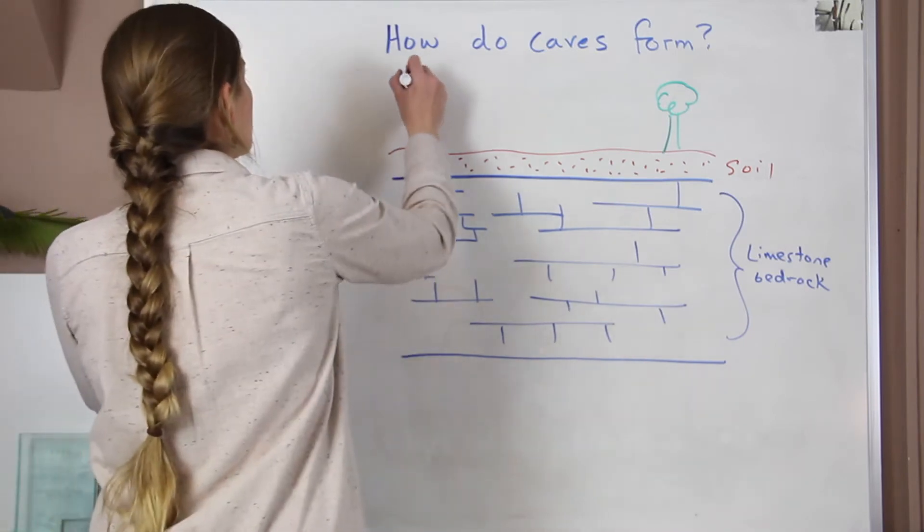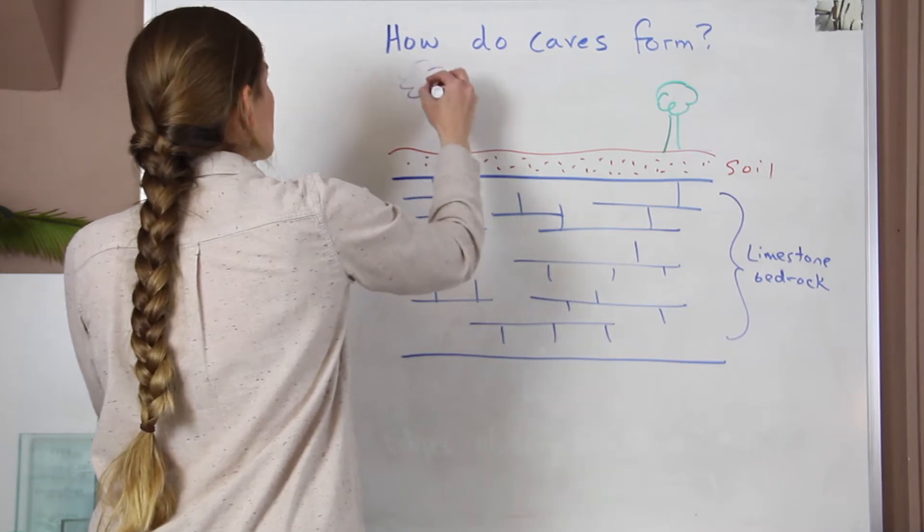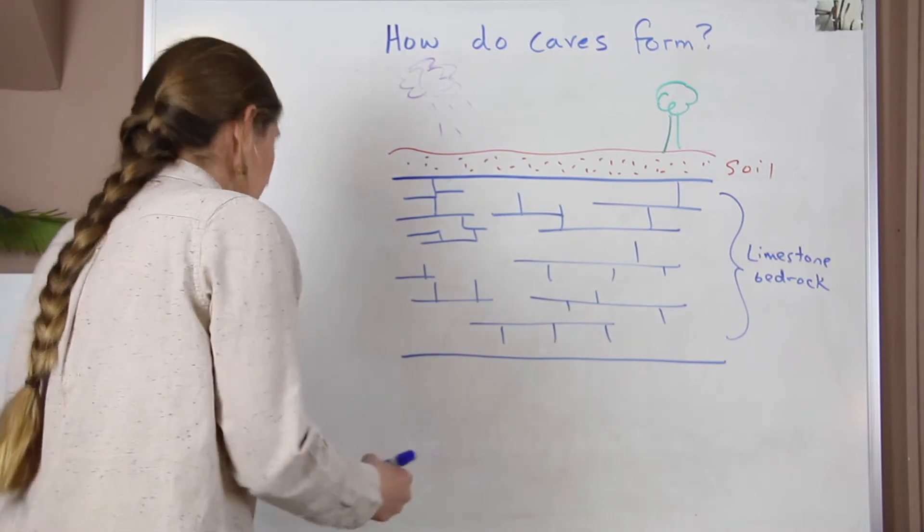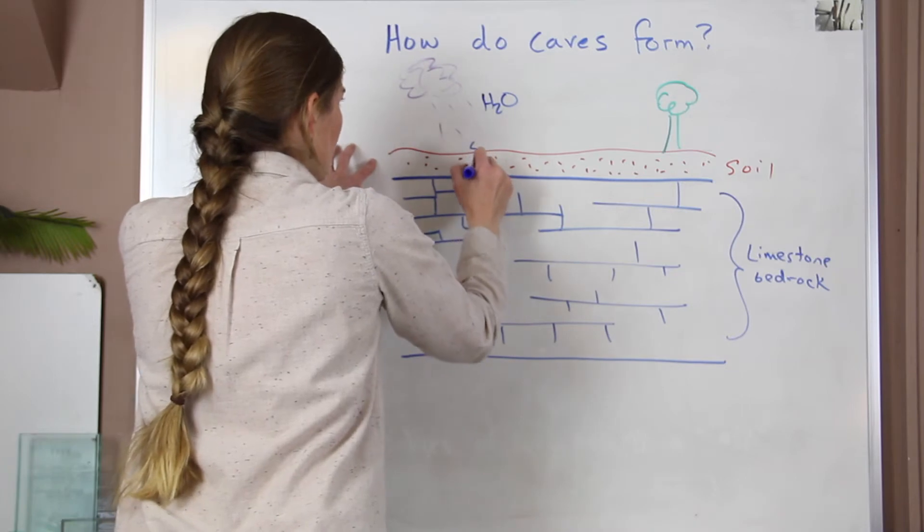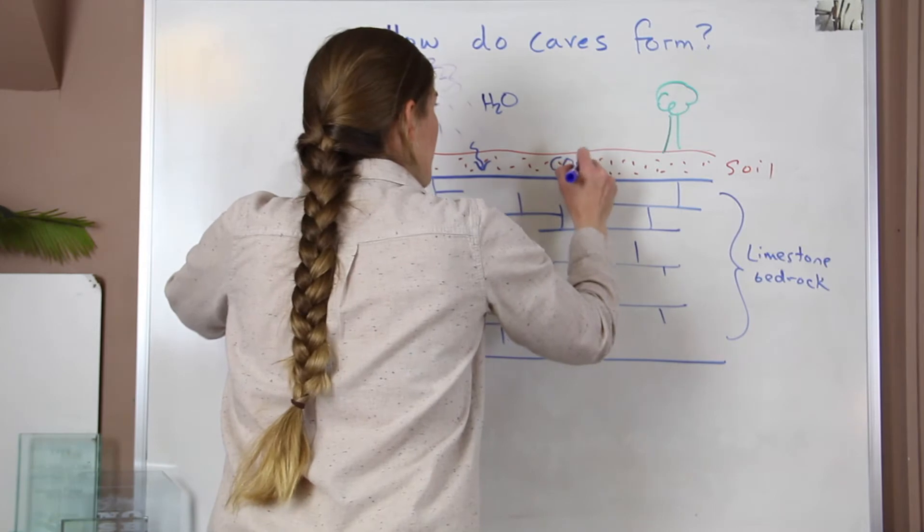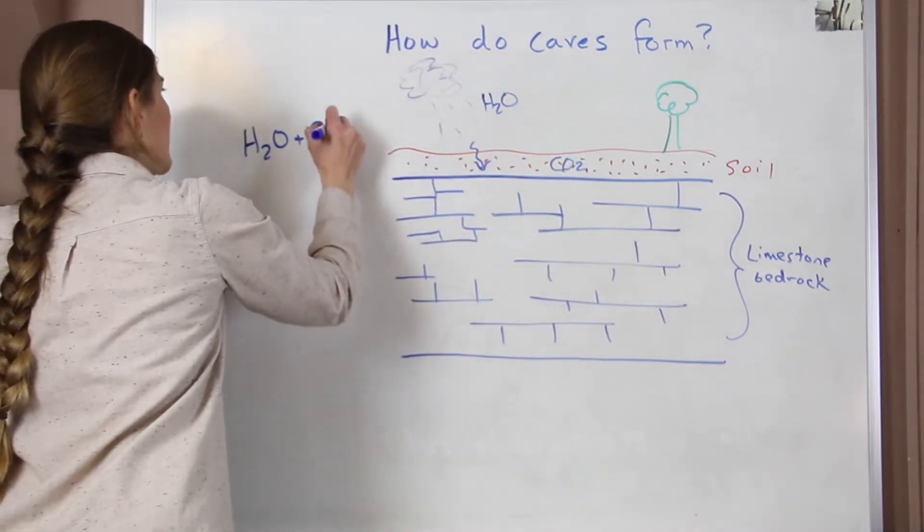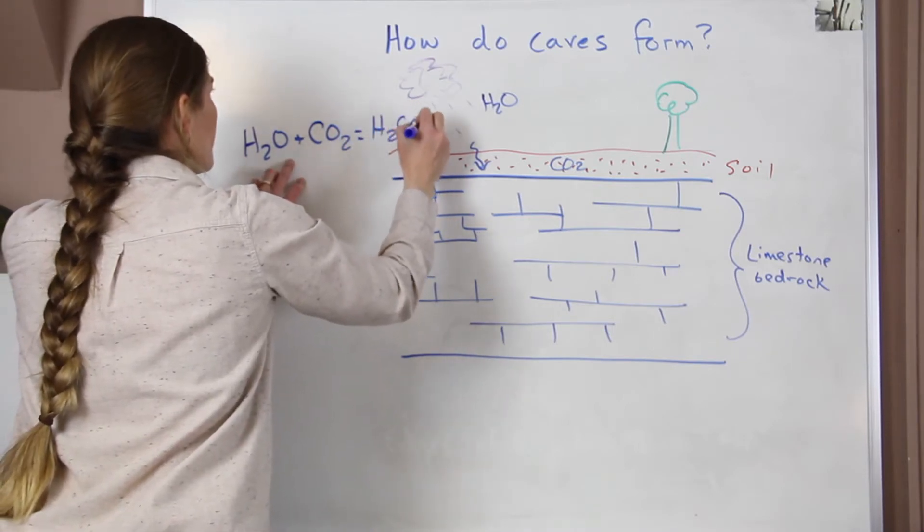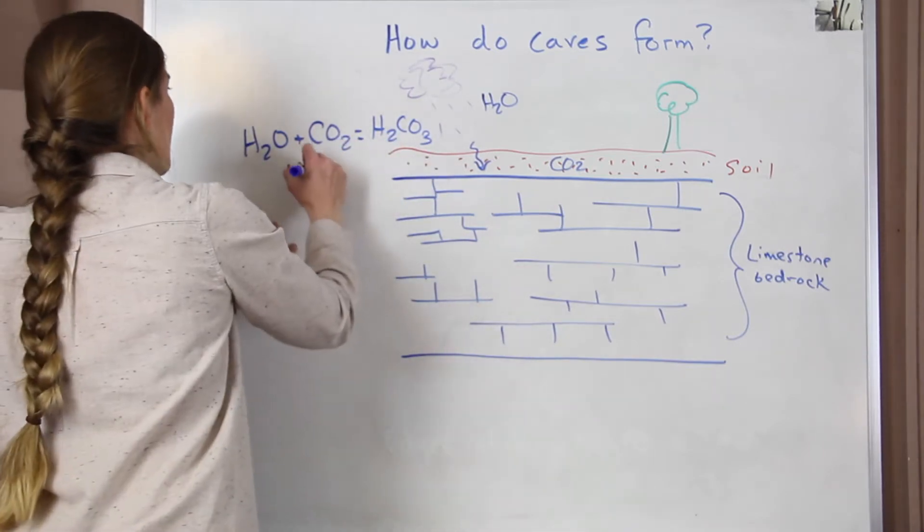Now when it rains, okay so it starts to rain. Up here we have our water from our rain. It moves, infiltrates into the soil. Soil contains carbon dioxide. So the water and the carbon dioxide join together to form carbonic acid. So H2CO3, this is a weak acid.